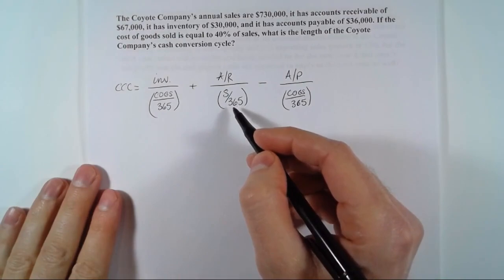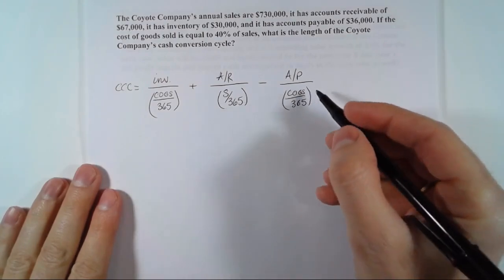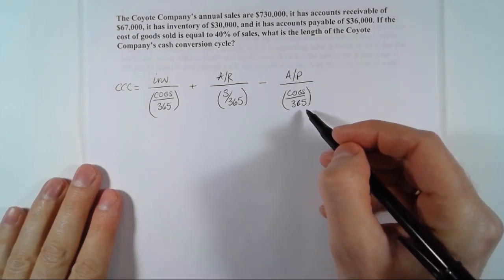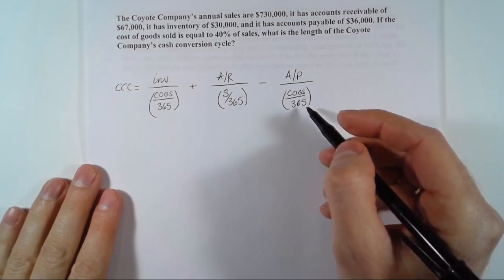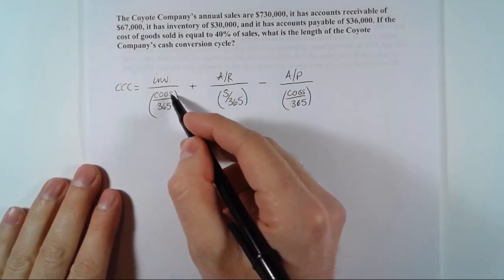The second component calculates how long from the time we sell the item — when it walks out the front door — to when we actually collect the cash. We then subtract how long we waited to pay our supplier.